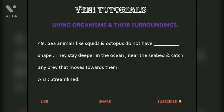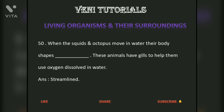Sea animals like squids and octopus do not have a streamlined shape. They stay deeper in the ocean near the seabed and catch any prey that moves towards them. When squids and octopus move in water their body shapes become streamlined. These animals have gills to help them use oxygen dissolved in water.